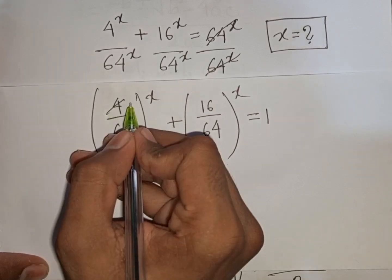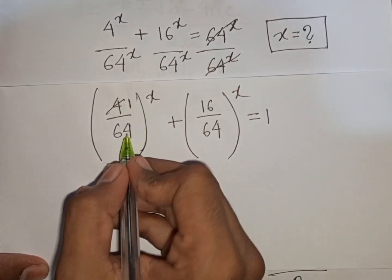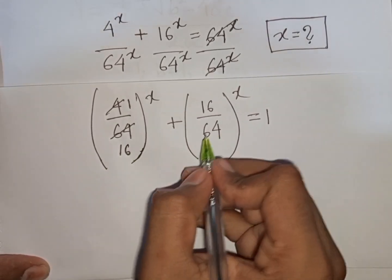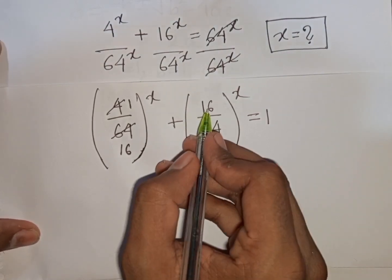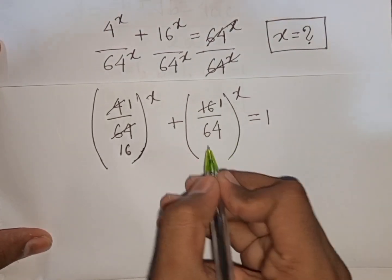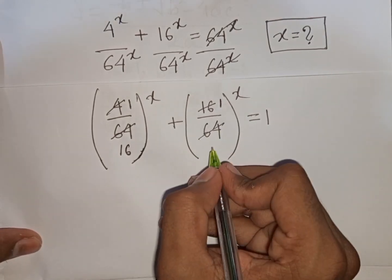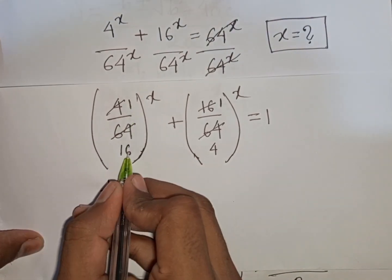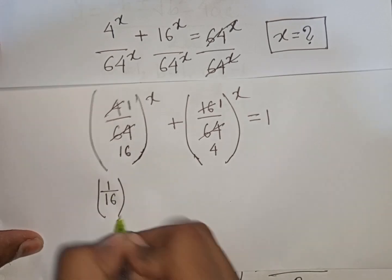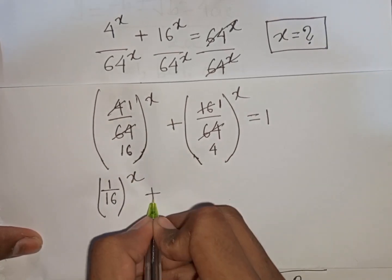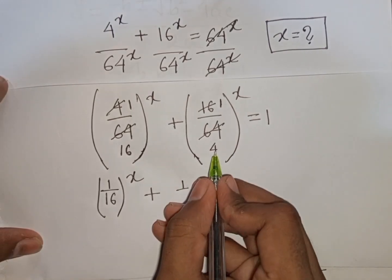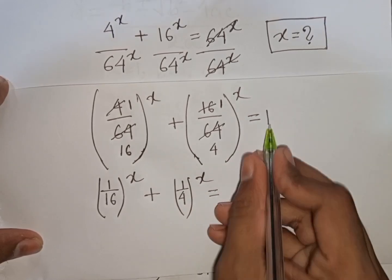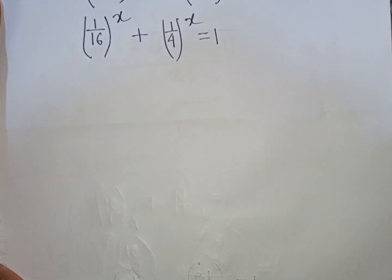Now 4 divided by 64 means it will be 1/16. And 16 divided by 64 means it will be 1/4. So we have (1/16)^x + (1/4)^x = 1.